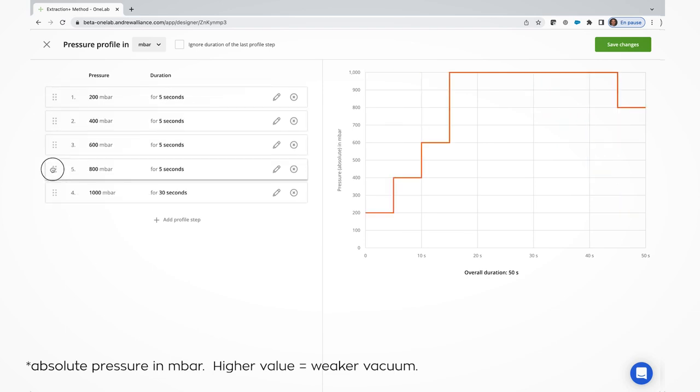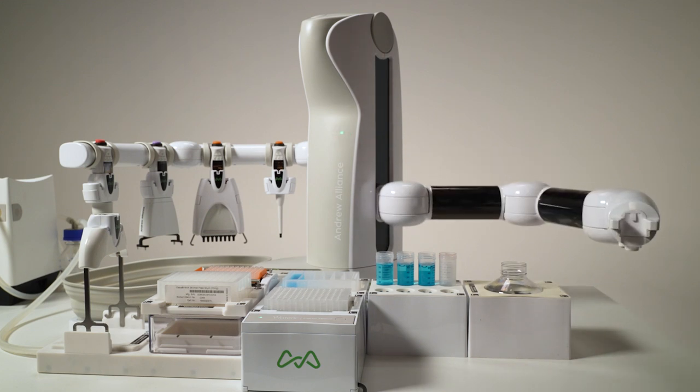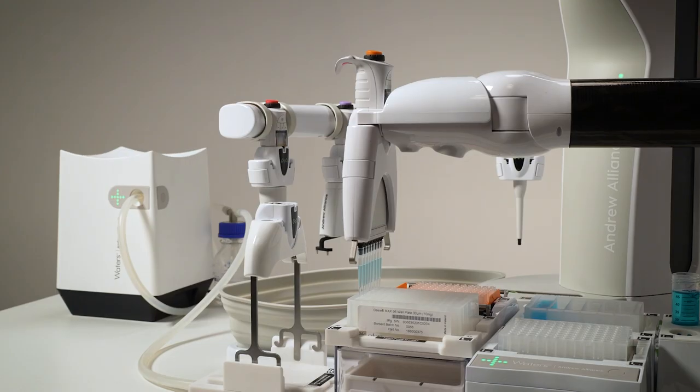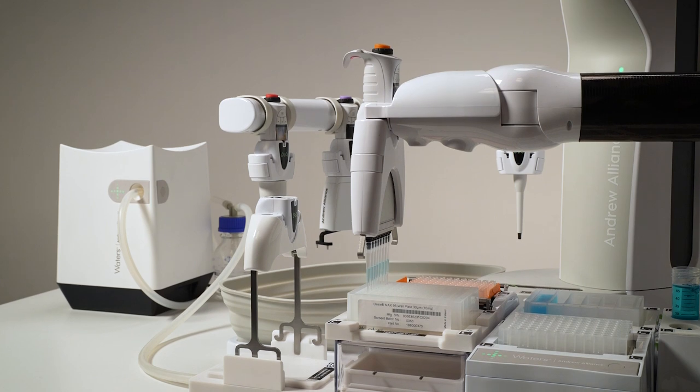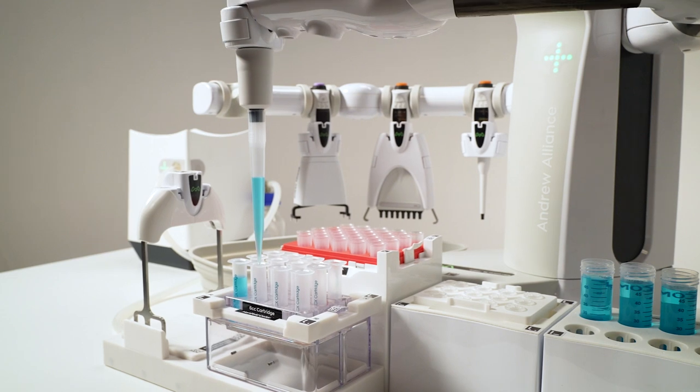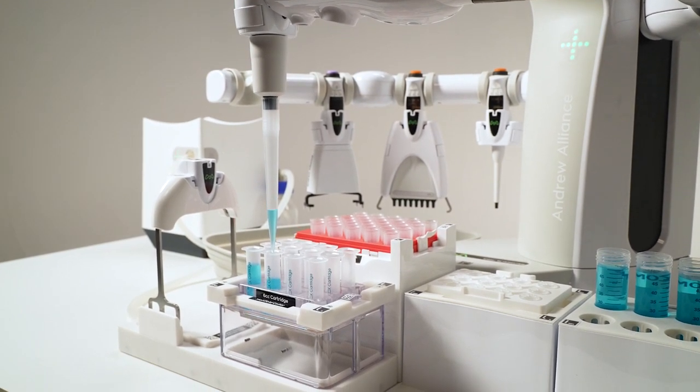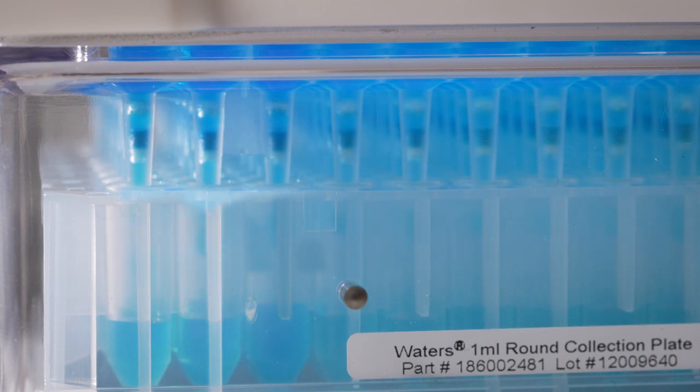Combined with the Andrew Plus robot, the Extraction Plus device is an all-in-one solution that fully addresses these critical requirements. Now, not only can we automate the tedious pipetting steps needed prior to and during extractions, like sample dilutions, normalizations, sorbent equilibrations, and washes, but these devices working in tandem also completely remove manual interventions like pressure settings and consumable movements as well.